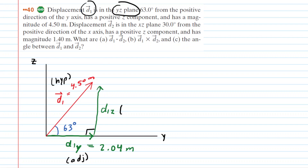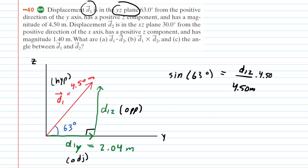We'll also work towards getting the Z component of vector D1. Notice D1Z is opposite from the 63 degree angle, so we use the sine function. We say the sine of 63 degrees equals the opposite, which is D1Z, over the hypotenuse, which is 4.5 meters. Multiplying both sides by 4.5 meters, we get roughly 4.01 meters for the Z component of vector D1. Let's label that on our diagram.